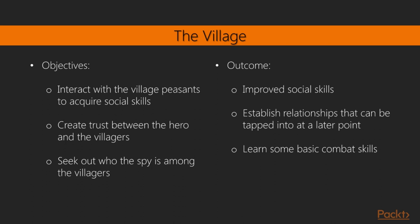The primary objective of this level will be for the player to learn social skills and engage with the village people and create relationships. Objectives: Interact with the village peasants to acquire social skills. Create trust between the hero and the villagers. Seek out who the spy is among the villagers. Outcomes: Improved social skills. Establish relationships that can be tapped into at a later point. Learn some basic combat skills.